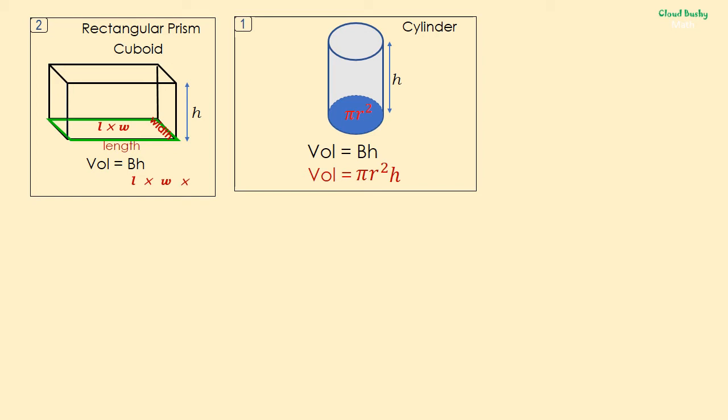If we multiply this by height, we have the formula that we can use to find the volume of a rectangular prism. So the volume of a cuboid is given by length times breadth times height.